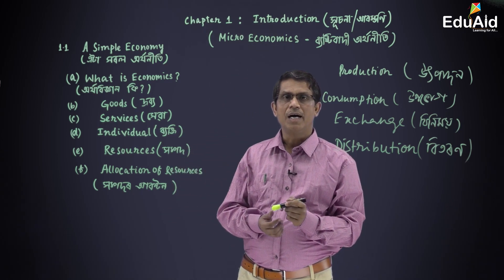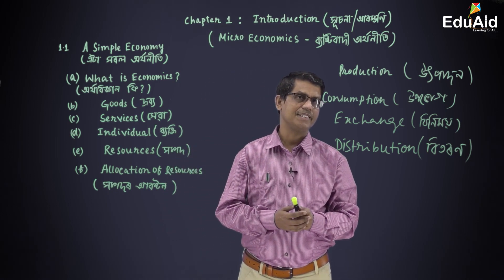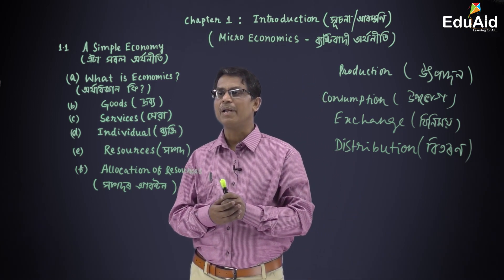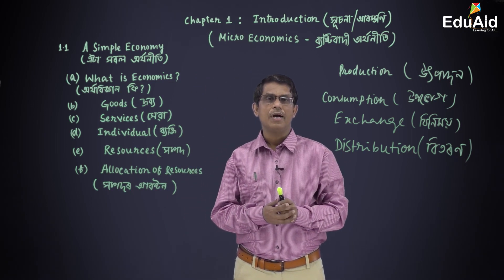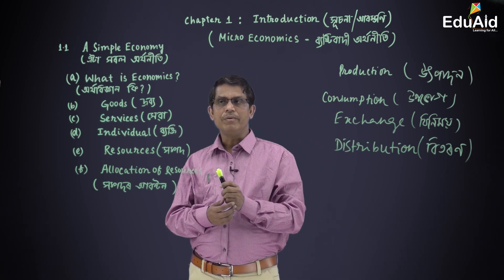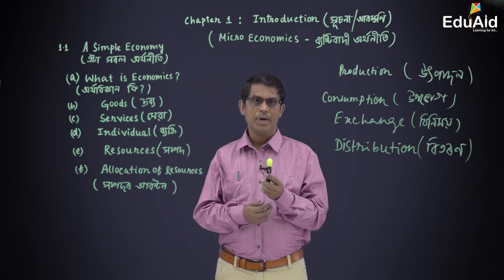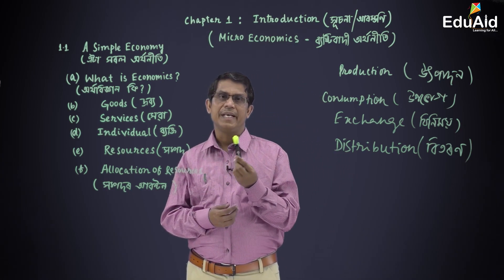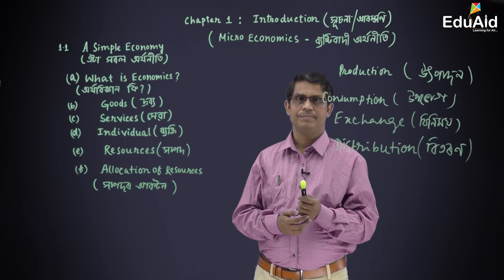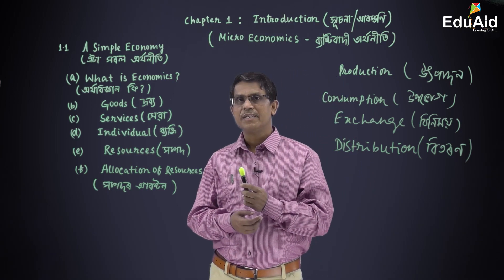What are goods? Goods are tangible things which can satisfy human wants and needs. Goods are tangible, goods are visible, goods have a definite shape and size, and goods are transferable.